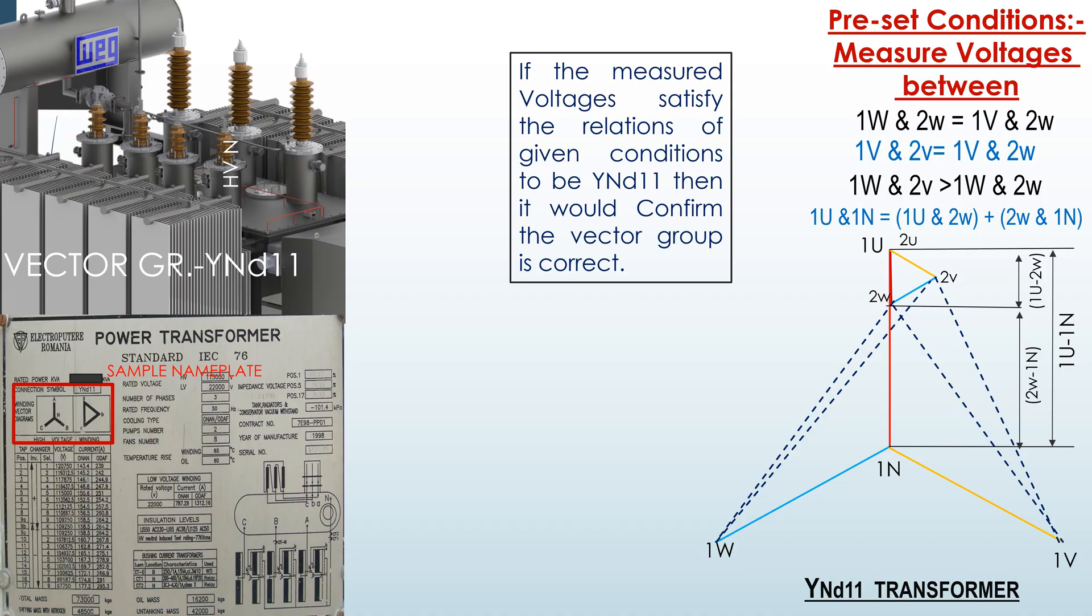If the measured voltages satisfy the relations of given conditions to be YND11, then it would confirm the vector group is correct.